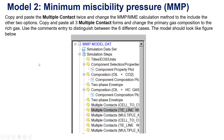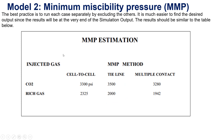I would like to suggest you copy and paste the multiple contact section and change the MMP calculation method to include the other two options. So you copy and paste all three multiple contact sections and change the primary gas composition to the rich gas. Use comments to distinguish between the six different cases. The model should look like the figure below. You can add multiple contacts using this icon. After you calculate with multiple methods, you can compare the three methods and results for MMP estimation.